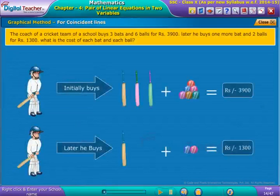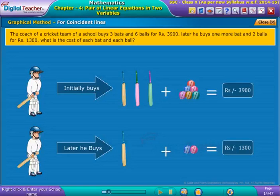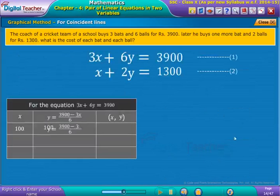Example: The coach of a cricket team of a school buys 3 bats and 6 balls for Rs. 3900. Later, he buys 1 more bat and 2 balls for Rs. 1300. What is the cost of each bat and ball? Present these values as ordered pairs. Repeat the same procedure for equation 2 as well.